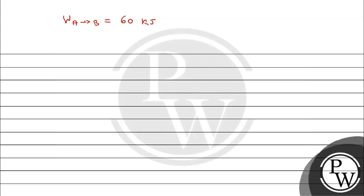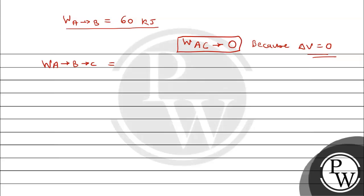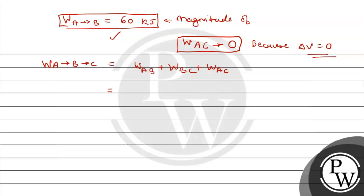Next, we calculate W for C to A. Looking at the graph, there is no change in volume (ΔV = 0), so W(C to A) = 0. So W(A to B) = 60 kJ, W(C to A) = 0.